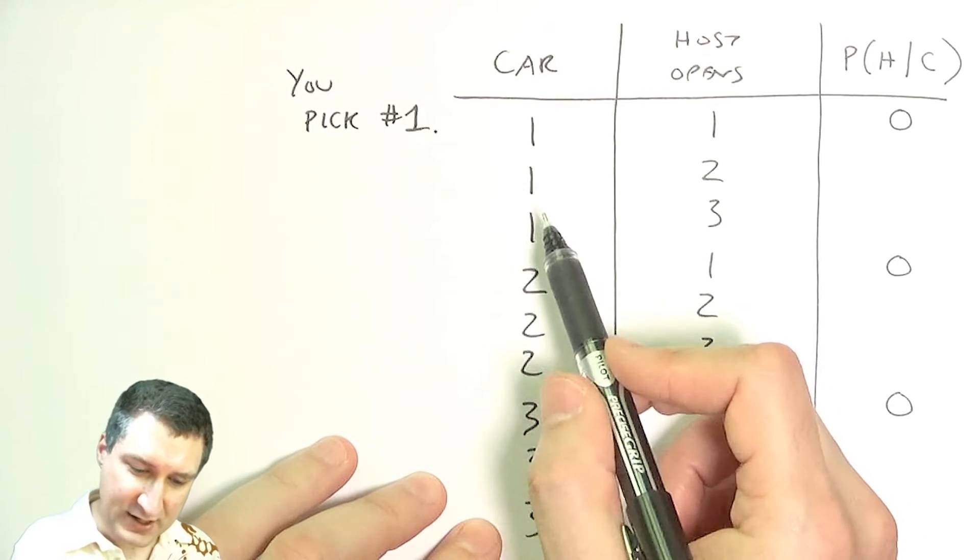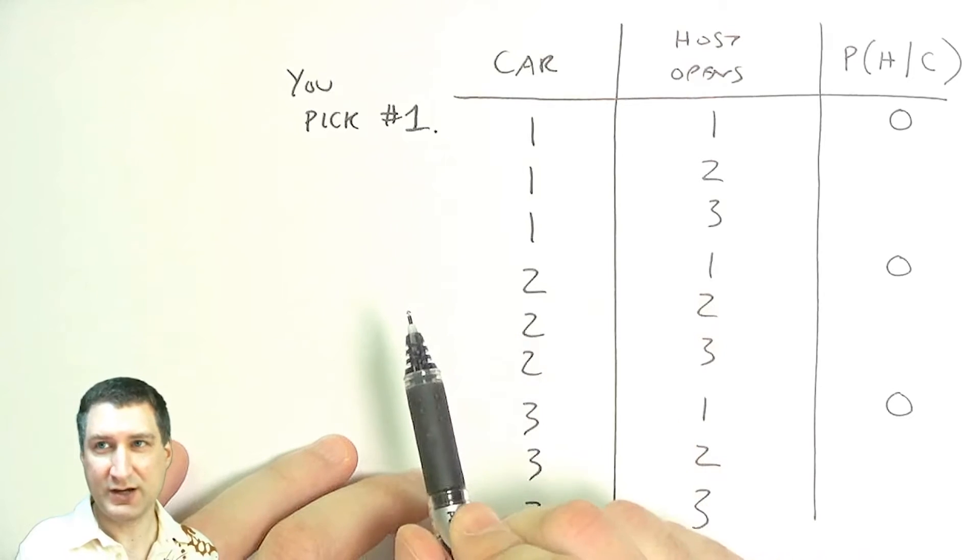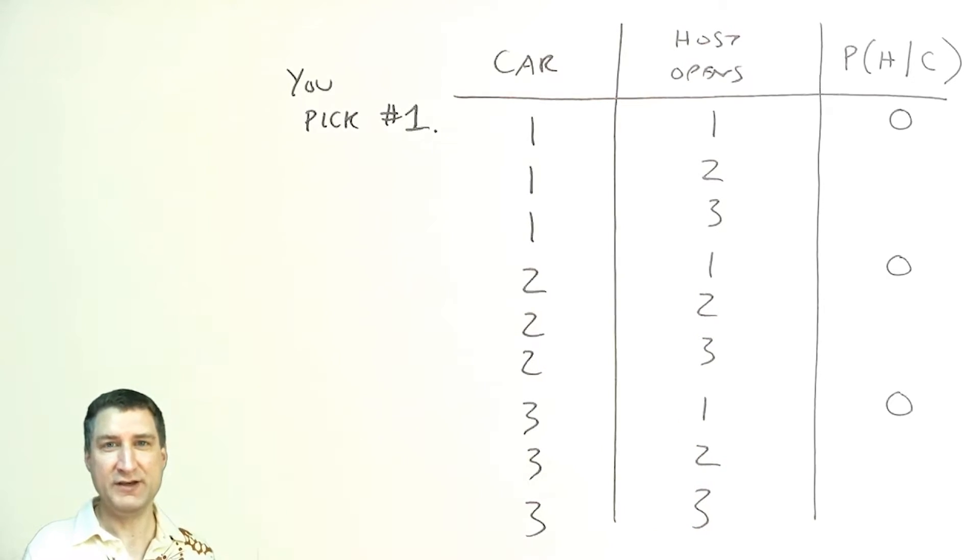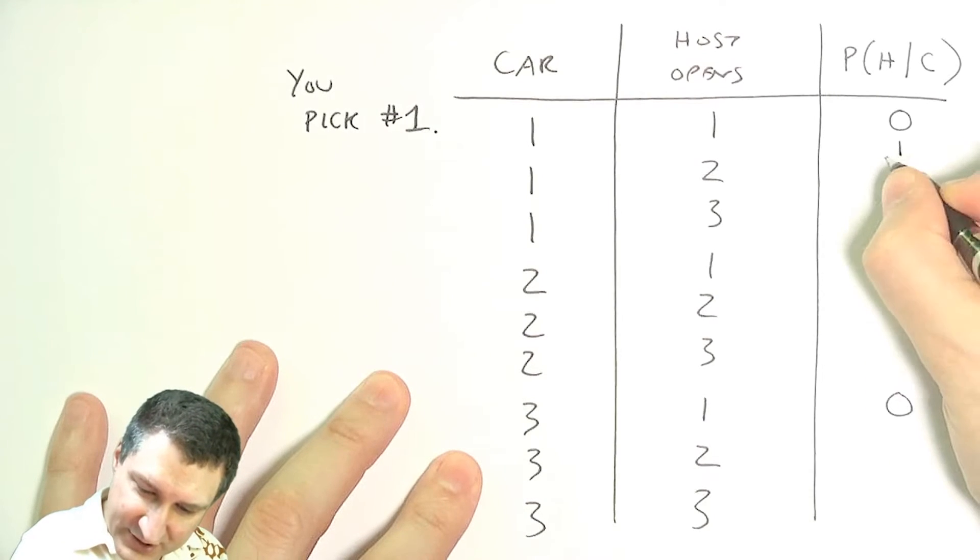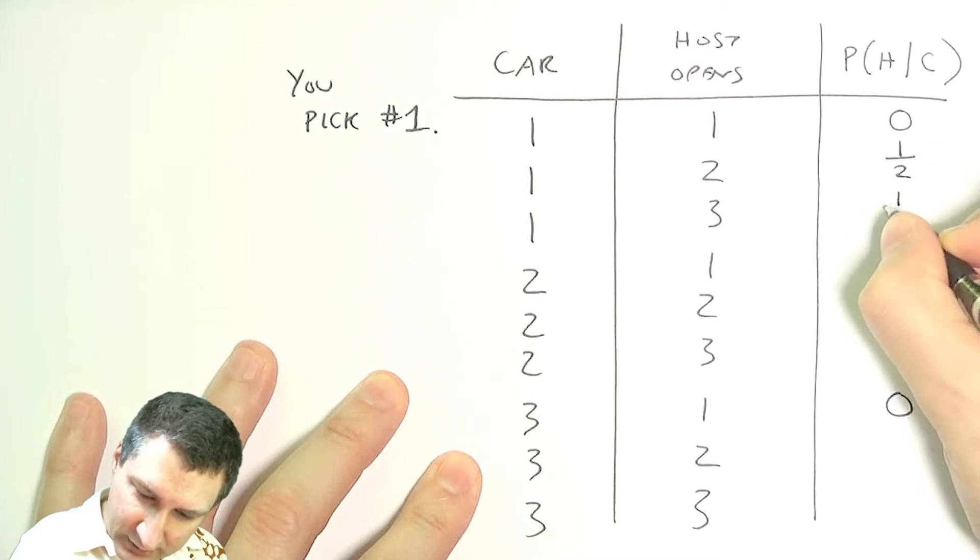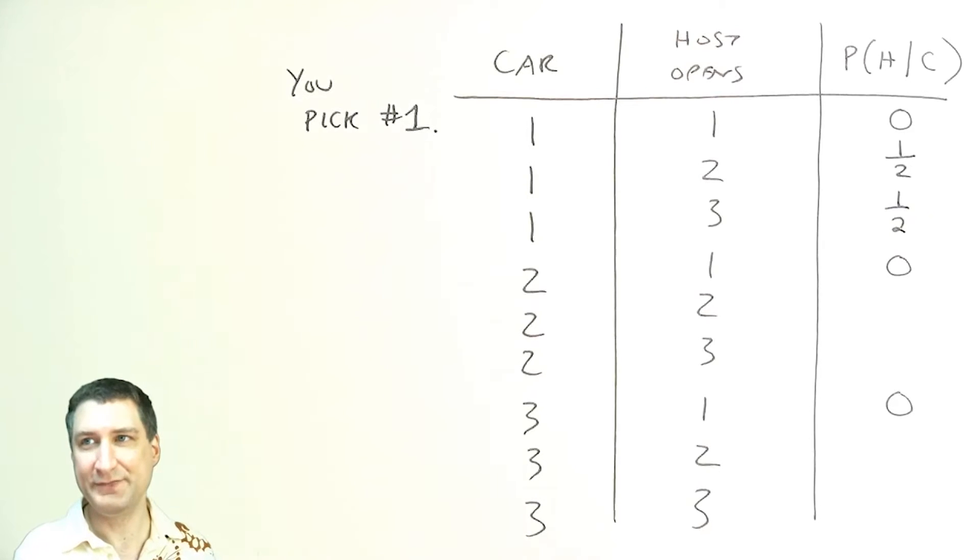In the first case, you pick number one. That's actually where the car is. Now the host has the option of either opening number two or number three to show you a goat. It doesn't really matter to him. So let's suppose that each of these things is probable with probability one half.